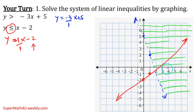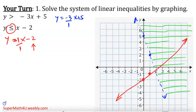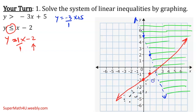Once I have my line, I go back. The y is by itself and my inequality is less than — that means the shade is going to be below. So instead of doing lines, I'm going to put points below — under, under. In a minute, you'll tell me where those two shades are going to intersect, because that's the whole idea.